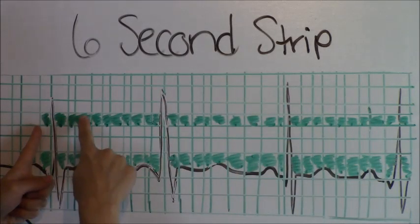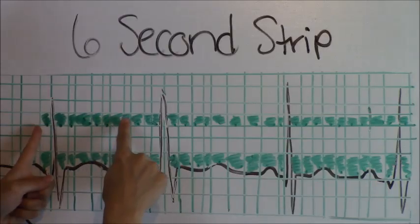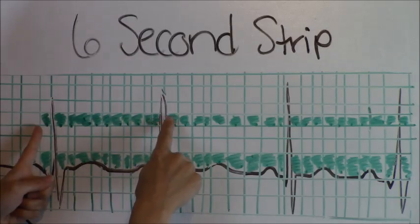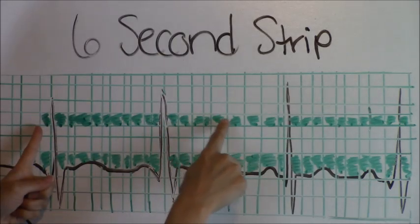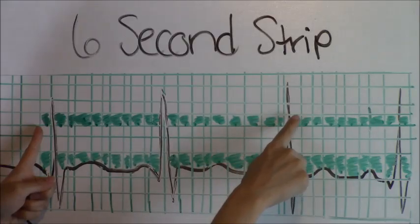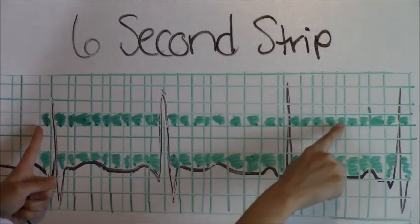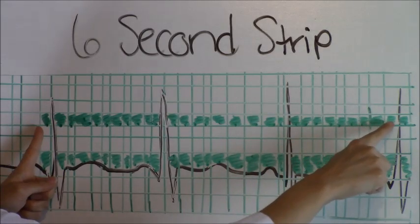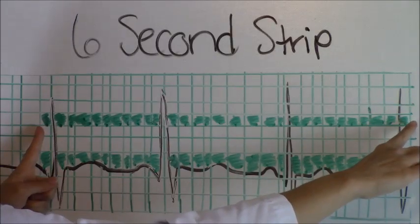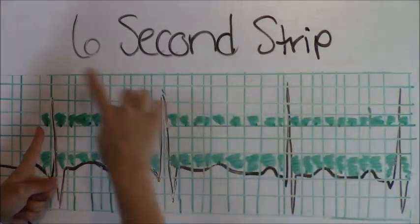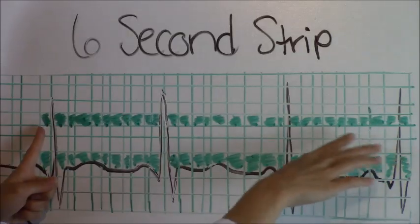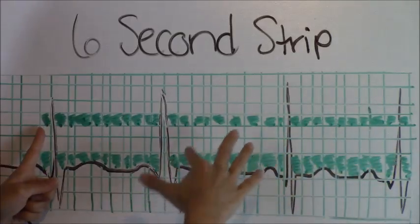1, 2, 3, 4, 5, 6, 7, 8, 9, 10, 11, 12, 13, 14, 15, 16, 17, 18, 19, 20, 21, 22, 23, 24, 25, 26, 27, 28, 29, 30. So let's count how many R waves presented. There was 1, 2, 3, 4. Four R waves.